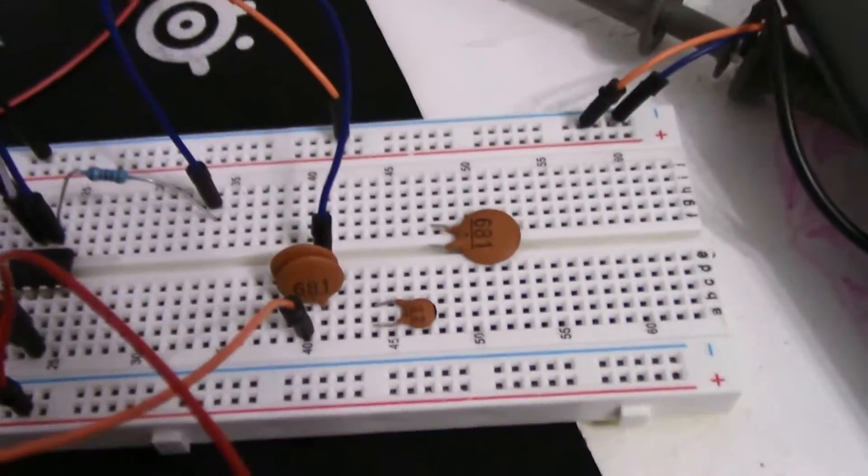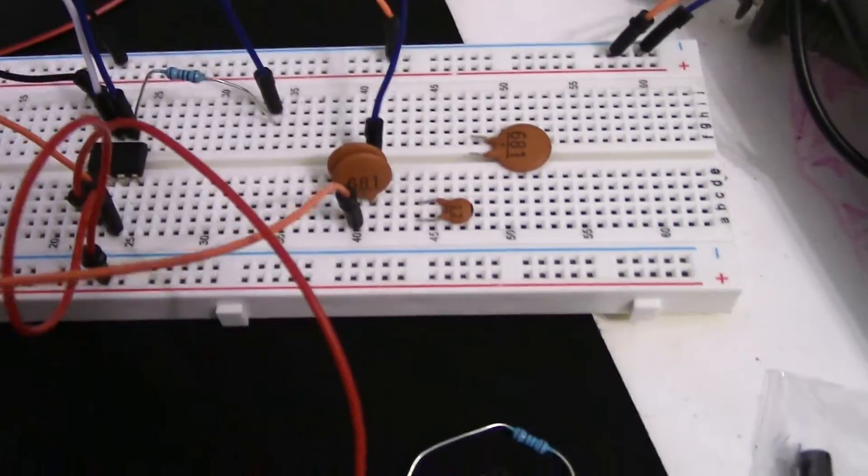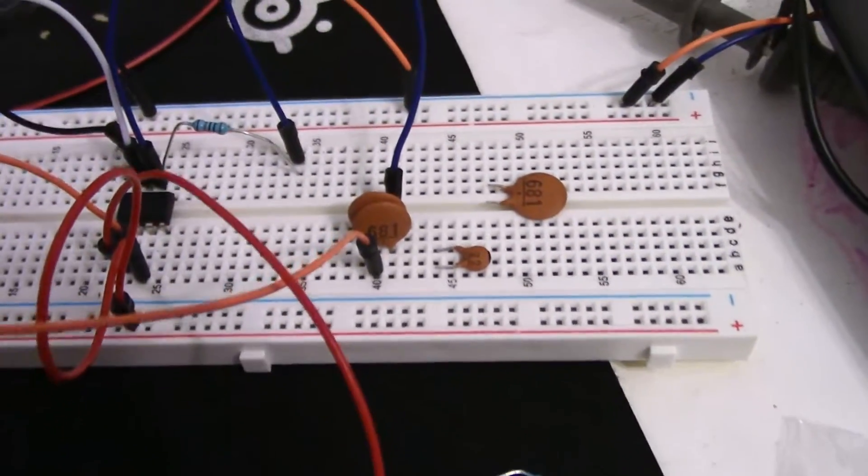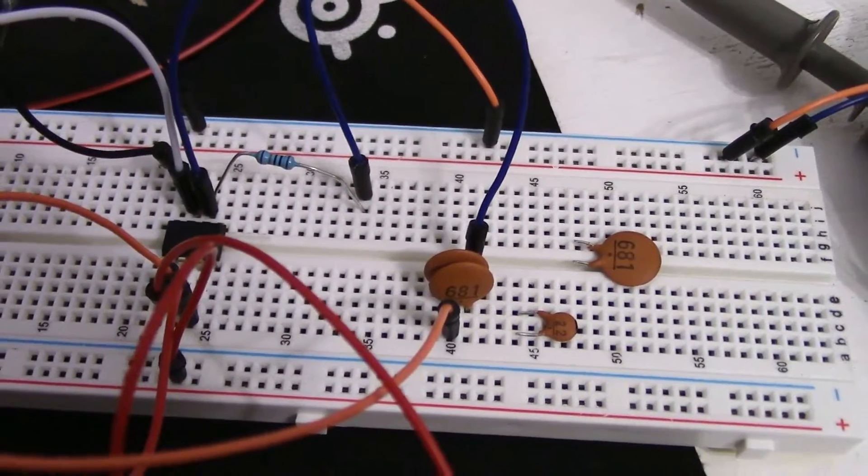So the difference between those is that an electrolytic capacitor only works in DC or has only one polarity. Ceramic capacitors have both polarities, meaning they work with AC signals. So I believe that was the number one issue with my circuit.